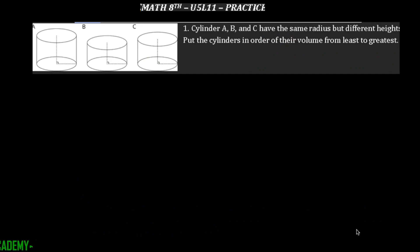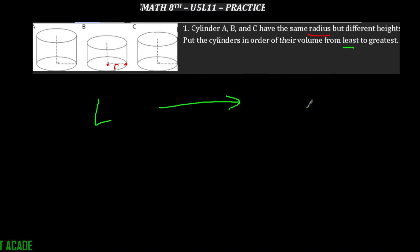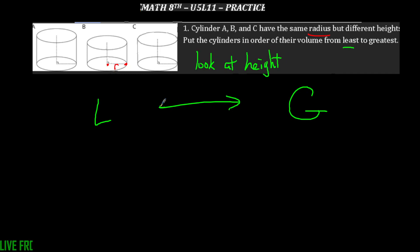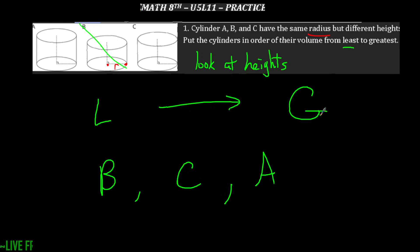On the back it says cylinders A, B, and C have the same radius. When you say radius, you're talking about that distance from the center of the base to the edge of the circle. Put the cylinders in order of their volume from least to greatest. Since they have the same radius, we have to look at the heights. B is the shortest, then C is next, and A is the largest — so the order from least to greatest is B, C, A.